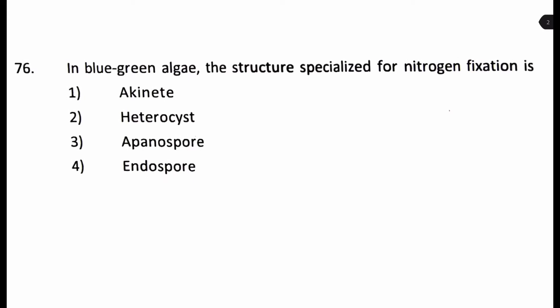Next question. In a blue-green algae the structure specialized for nitrogen fixation is 1. Akinete, 2. Heterocyst, 3. Aplanospores, that will be aplanospores not apanospores. Number 4. Endospores.